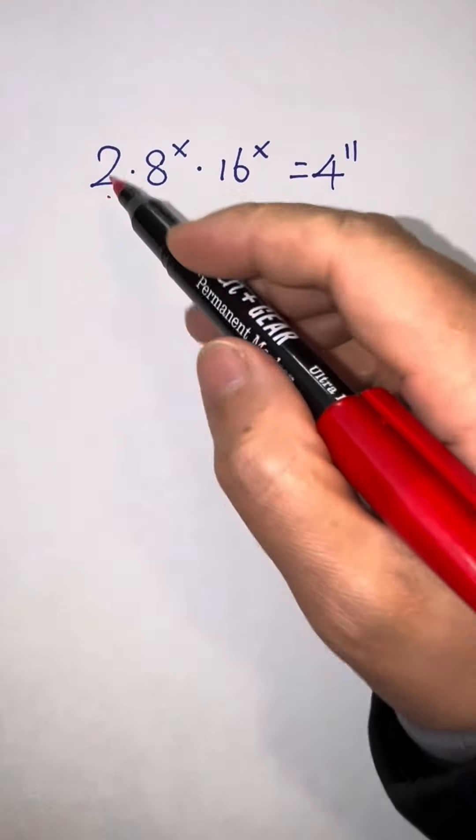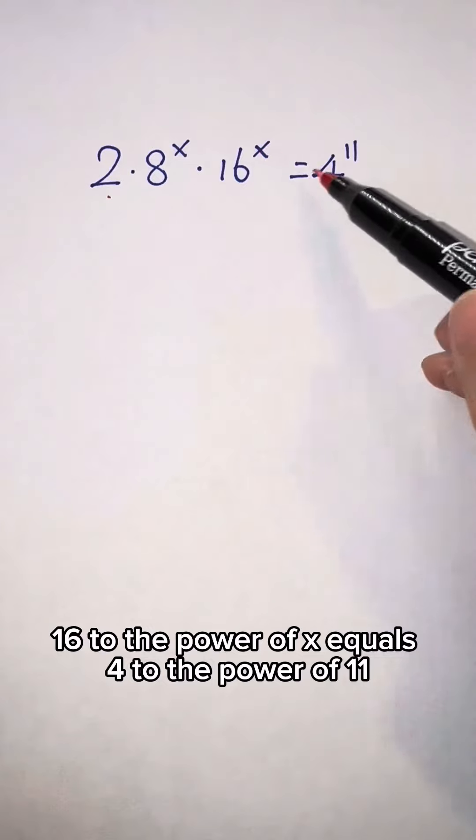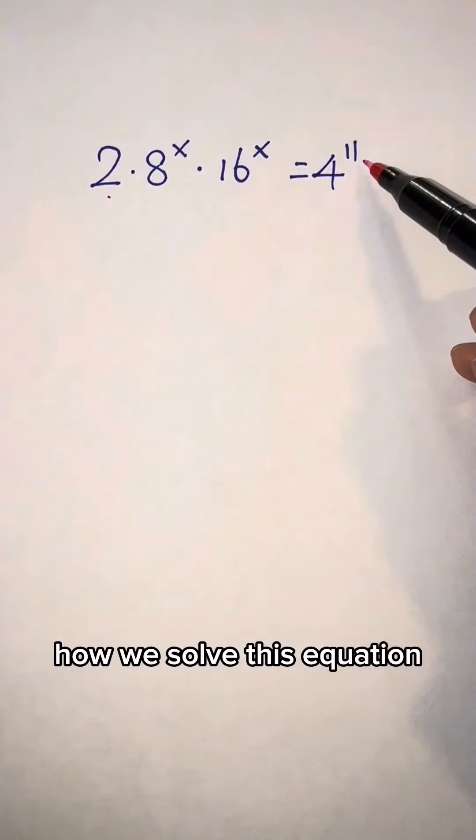Hi guys, come over here. 2 times 8 to the power of x times 16 to the power of x equals 4 to the power of 11. How will you solve this equation?